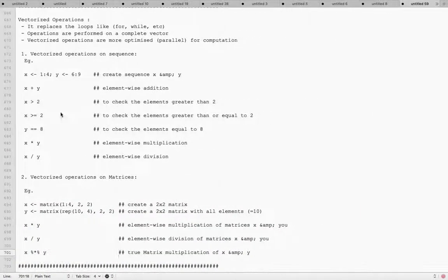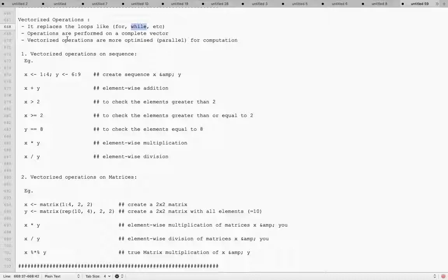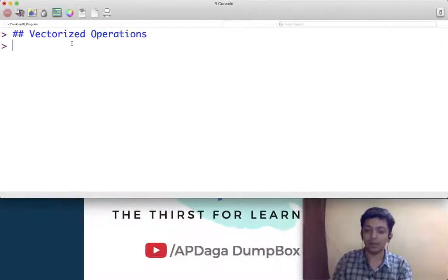The key feature of vectorized operations is you can avoid all kinds of loops using for or while, and whatever operation you perform, that operation gets directly performed on the complete vector. That is why the operations are optimized because they are parallel, happening at the same time on all the elements of the vector.